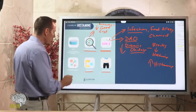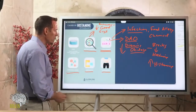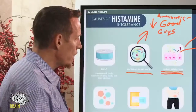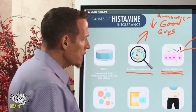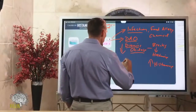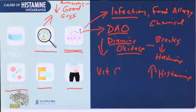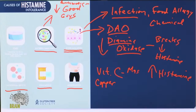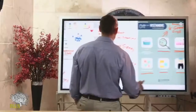Nutritional deficiencies are a big cause. The key deficiencies that directly impact the ability to break down histamine start with vitamin C. Vitamin C is a natural antihistamine — it works by stabilizing mast cells. Let's talk about mast cells for just a minute.